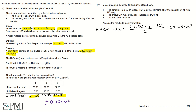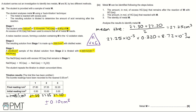Using the equation: moles = volume × concentration. We calculate the moles of NaOH using the mean titer: 27.25 × 10⁻³ dm³ × 0.320 mol dm⁻³ = 8.72 × 10⁻³ mol. However, this is only for the 25 cm³ sample.